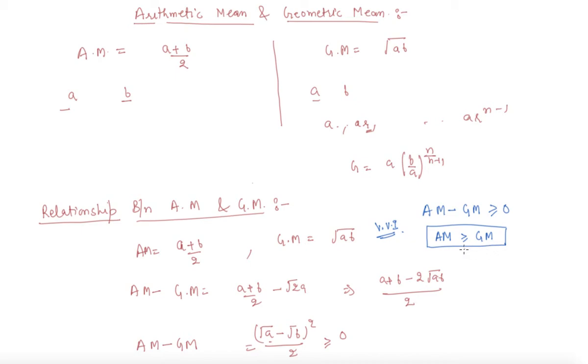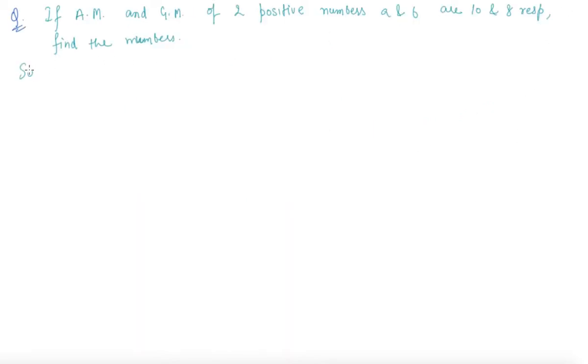Now let's discuss a question based on it. Here is the question given to us in which AM of two positive numbers is given to us as 10, and GM of these two numbers is 8. Let me write the condition for this.